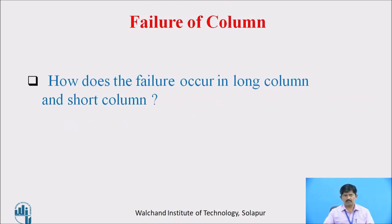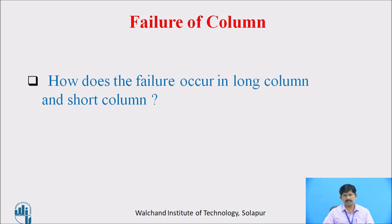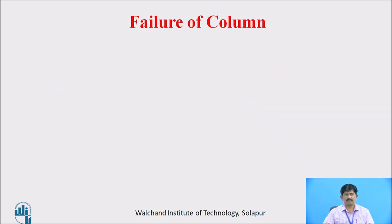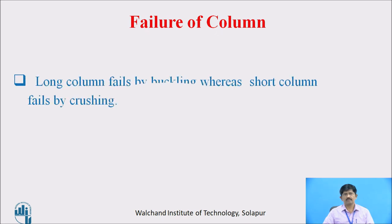How does failure occur in a long column and a short column? Pause the video and try to write the answer on paper. Long column fails by buckling whereas short column fails by crushing.